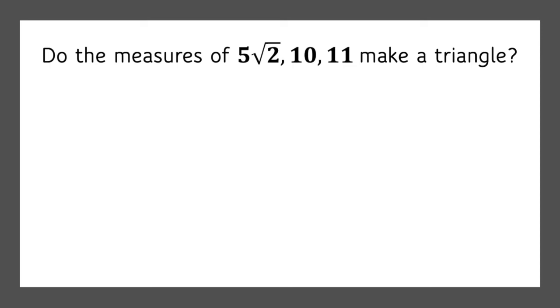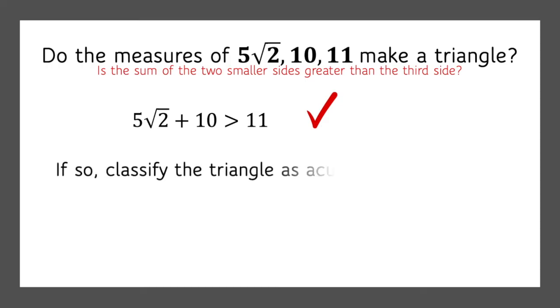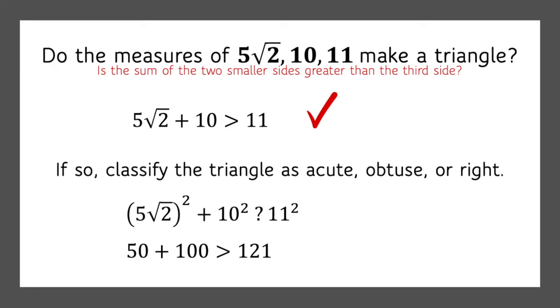Okay, this one looks a little bit more complicated, but again, the concept, the process, is the same. Is the sum of the two smaller sides greater than the third side? Well, 5 times the square root of 2 plus 10, yep, that's greater than 11. So we can go on to the next step. So 5 root 2 squared plus 10 squared, what relationship does that have to 11 squared? Well, 5 root 2 squared is 50, plus 10 squared is 150, which is greater than 121. That means we're working with an acute triangle.